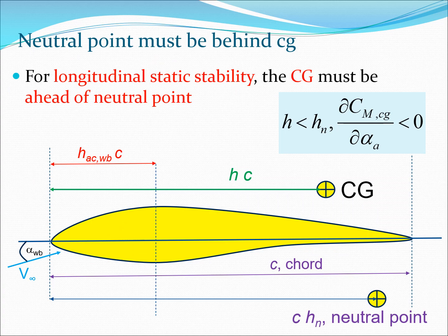Let us take a pictorial look at these definitions. I have drawn the wing-body section here. The CG is placed at a distance H·C from the leading edge, and the neutral point is at a distance HN·C. You can clearly see that when H is less than HN — as shown in this diagram — you have longitudinal static stability. For longitudinal static stability, the CG must be ahead of the neutral point. H is the green distance and HN is the larger distance, confirming the derivative of CMCG with respect to alpha-A is less than zero.